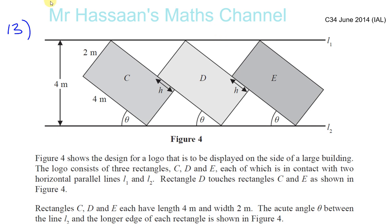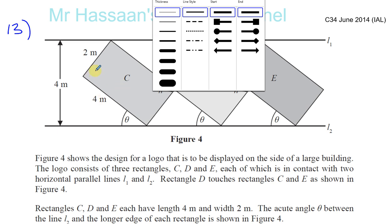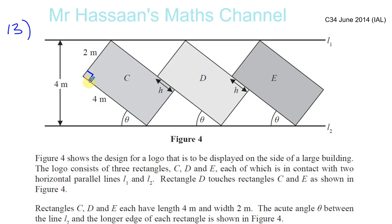So we know they're rectangles, and a few things we can deduce from that. One is that these corners are right angles, and that opposite sides are equal — length four meters and width two meters. C, D, and E are the names of the rectangles which are in contact with two horizontal parallel lines L1 and L2. Rectangle D touches rectangles C and E as shown.